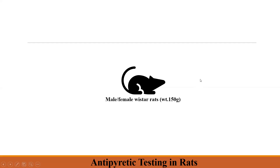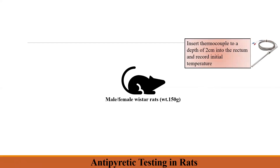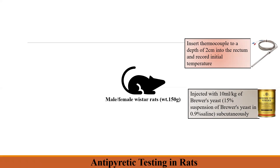Initially, thermocouples are used for monitoring the rectal temperature. They are inserted up to a depth of 2 cm into the rectum of the rat and the initial temperature is recorded. Then the animals are injected with Brewer's yeast — a 15% suspension prepared in 0.9% saline — and a 10 ml per kg dose is injected subcutaneously to the rat.